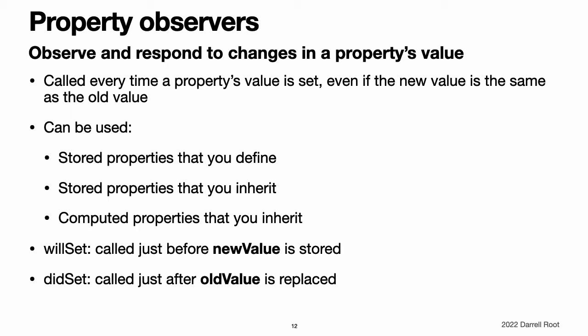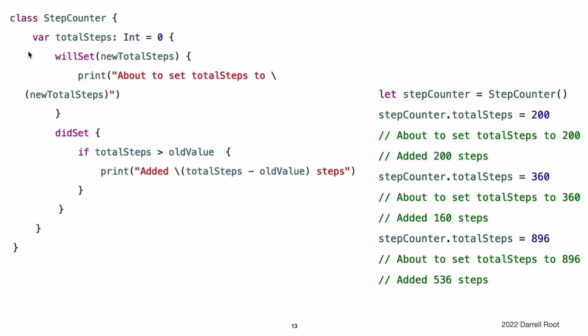They are not called while the class is setting its own properties before the superclass initializer has been called. For more information about initializer delegation, see initializer delegation for value types and initializer delegation for class types. Here is an example of willSet and didSet in action. The example defines a new class called StepCounter, which tracks the total number of steps that a person takes while walking. This class might be used with input data from a pedometer or other step counter to keep track of a person's exercise during their daily routine.